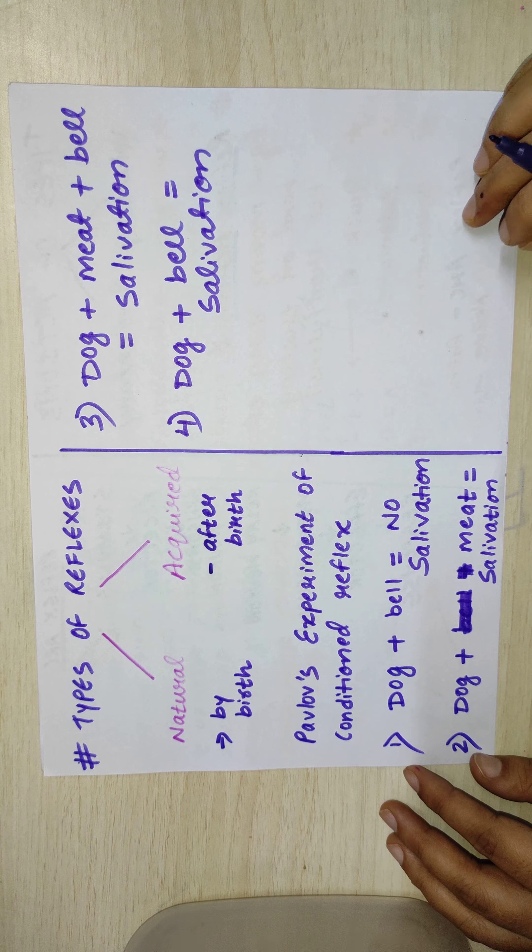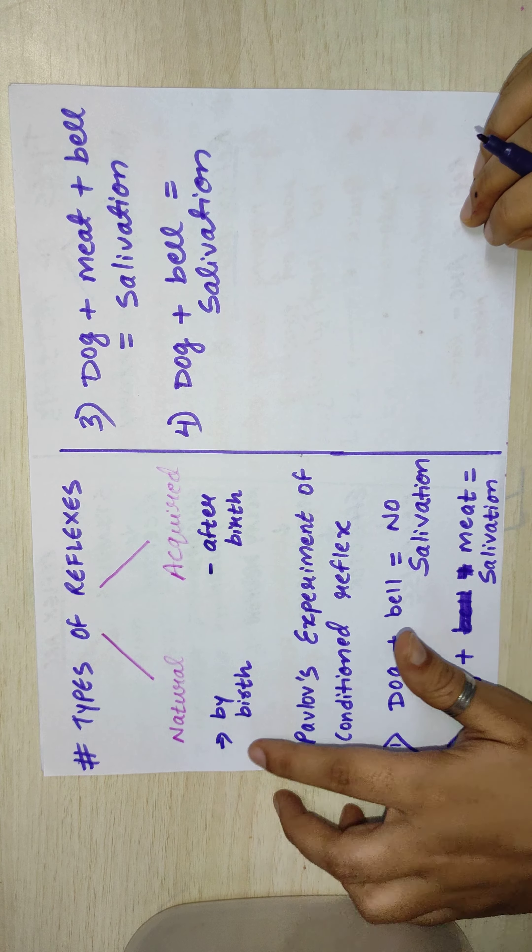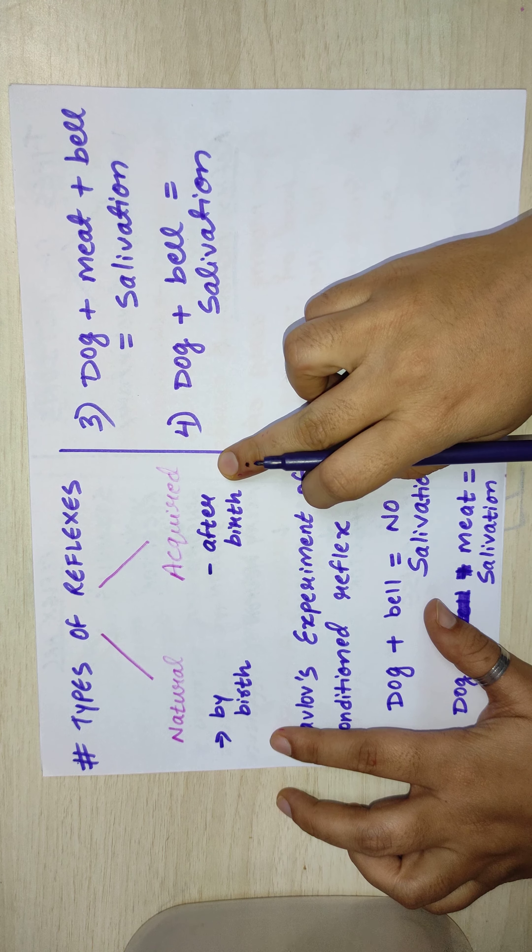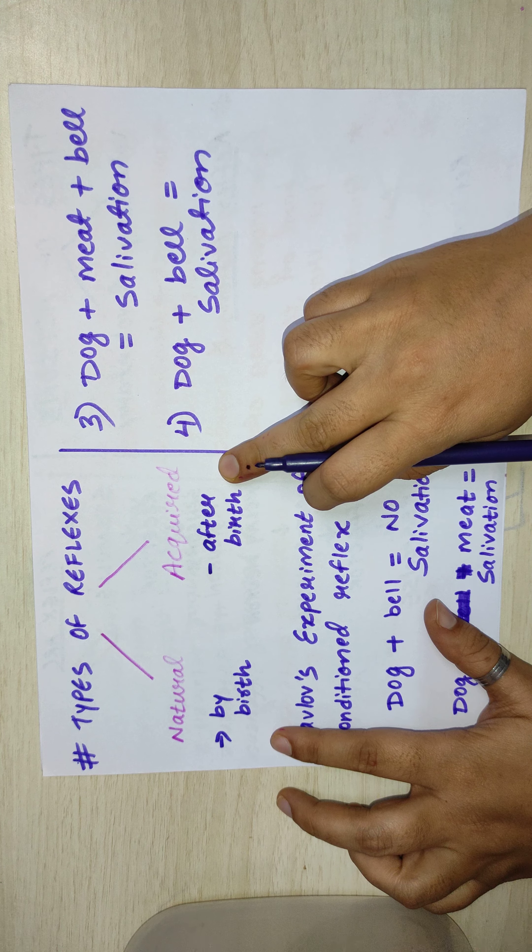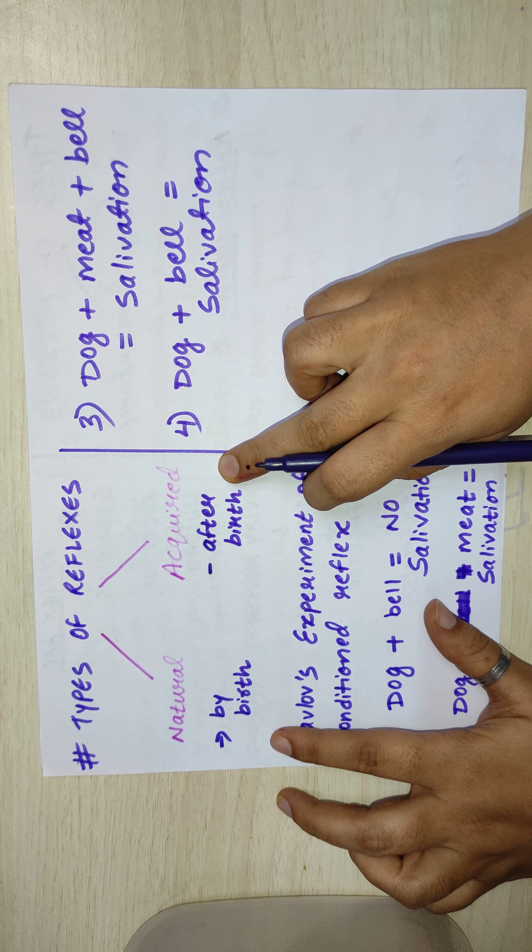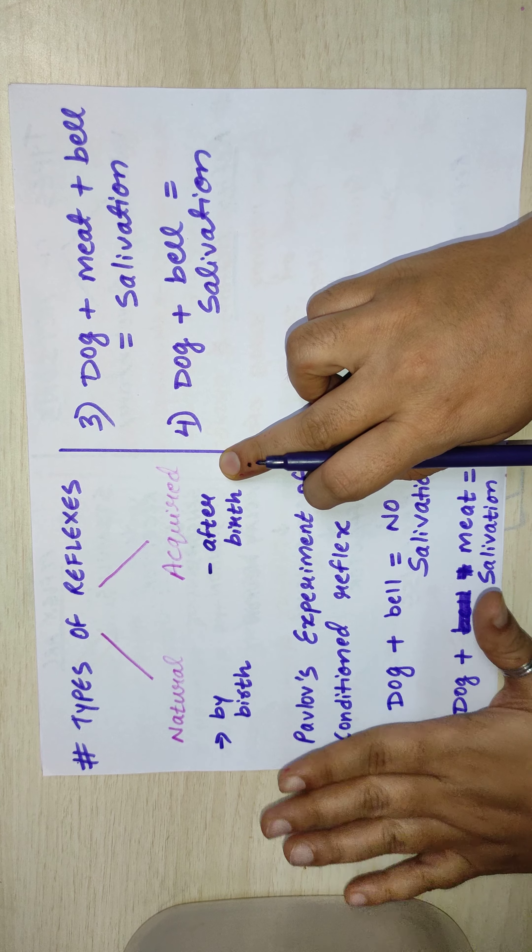You are clear with natural reflex and acquired reflex. Natural is by birth and acquired is something acquired after birth - that is, we learn it or we acquire it after our birth. So here I will give you an example.